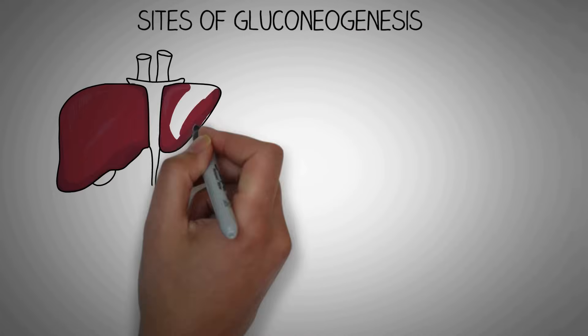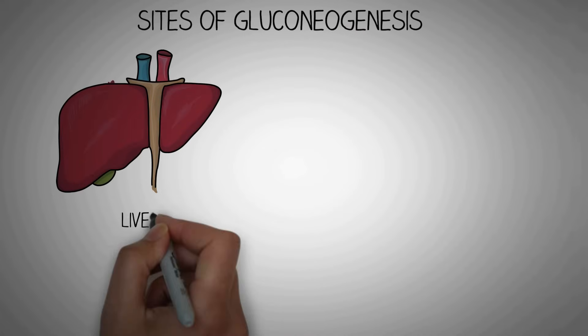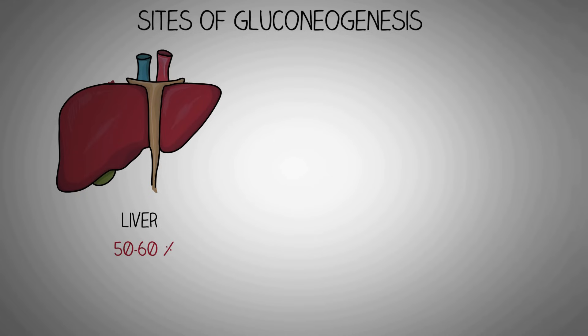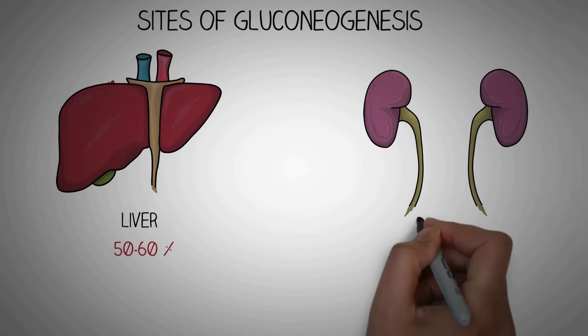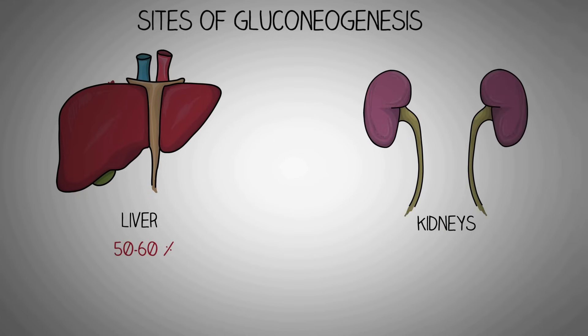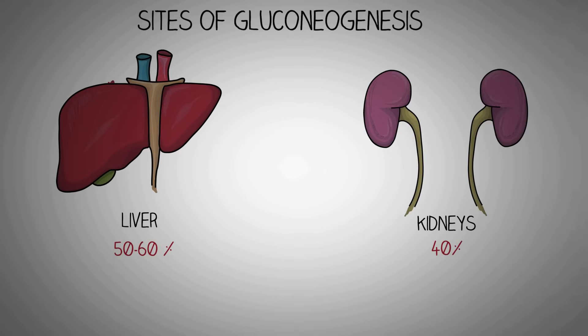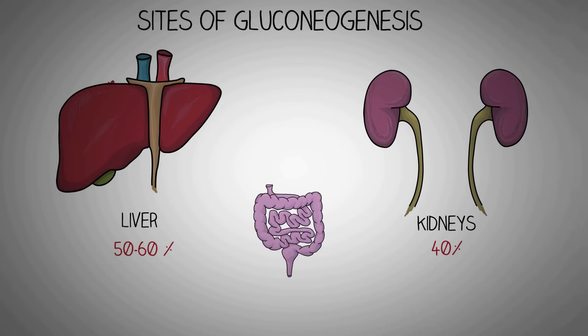About 50-60% of gluconeogenesis takes place in the liver, 40% takes place in the kidneys, and some minor amount of gluconeogenesis also takes place in the intestines.